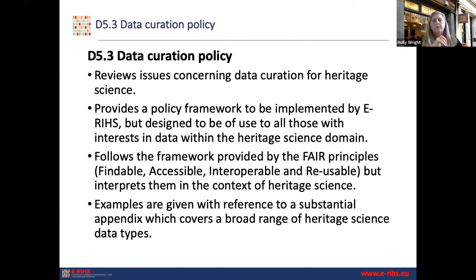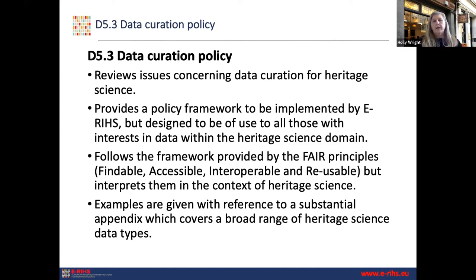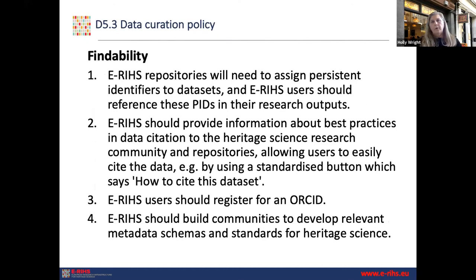The FAIR principles — published in 2016 — basically say that all data should be findable, accessible, interoperable, and reusable. To my mind, the really important thing is that I now consider those four things to be of equal importance. The main part of the report contains this framework incorporating FAIR into heritage science, and then there's an equally large appendix trying to look at the actual range of heritage science data types that are out there. I'm going to run through all 33 policy points very quickly — Julian has pulled out some particular points for discussion afterwards, but I'll just run through them all first.